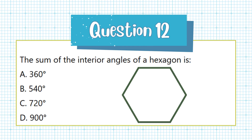Question 12. The sum of the interior angles of a hexagon is: a. 360 degrees, b. 540 degrees, c. 720 degrees, d. 900 degrees.